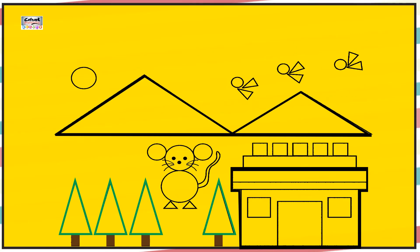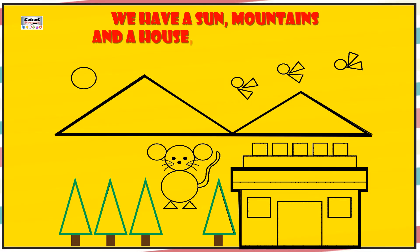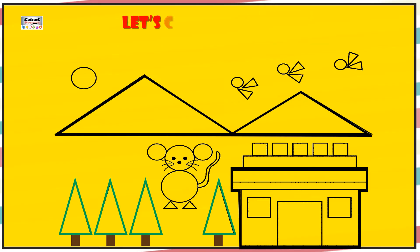As you can see, we have a sun, mountains and a house, trees and a cat. So friends, now let's count the shapes and write the numbers.